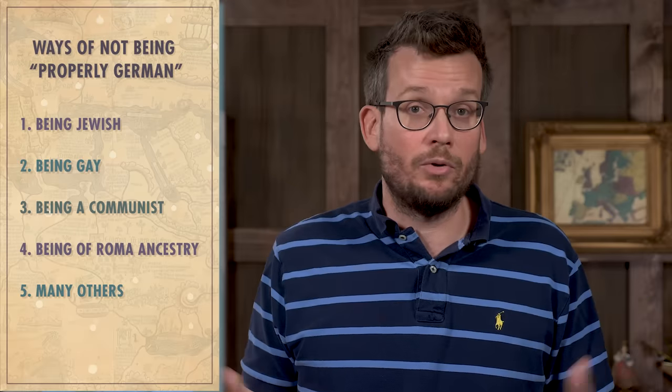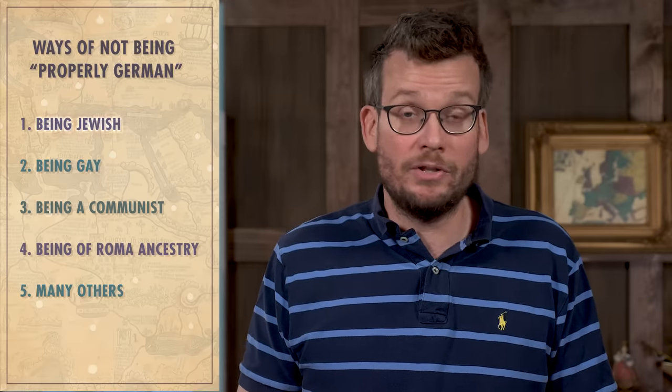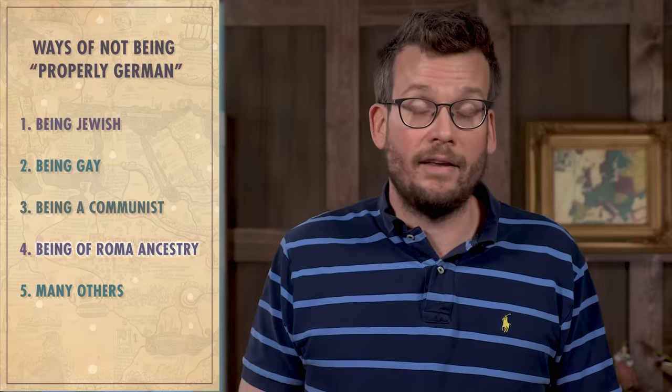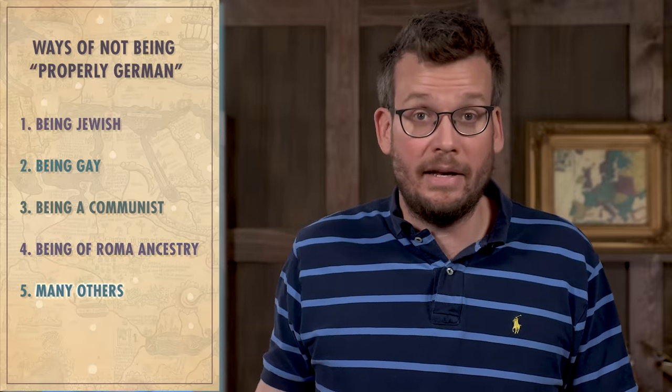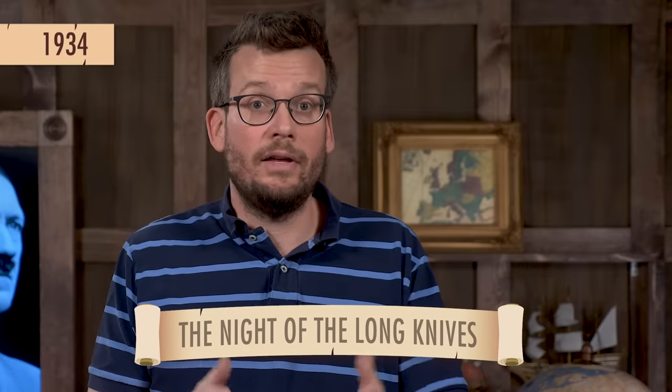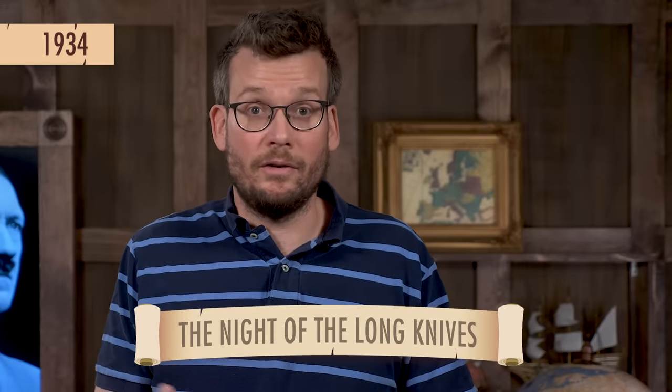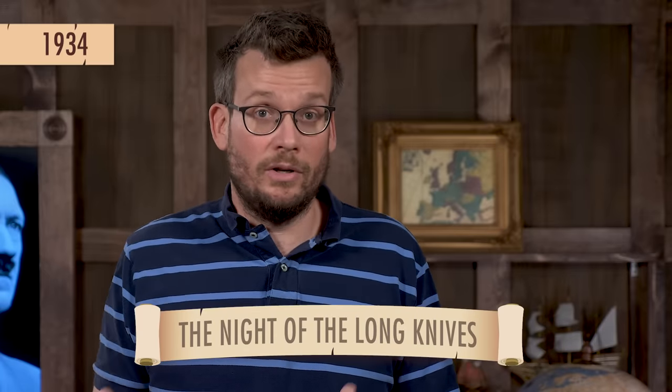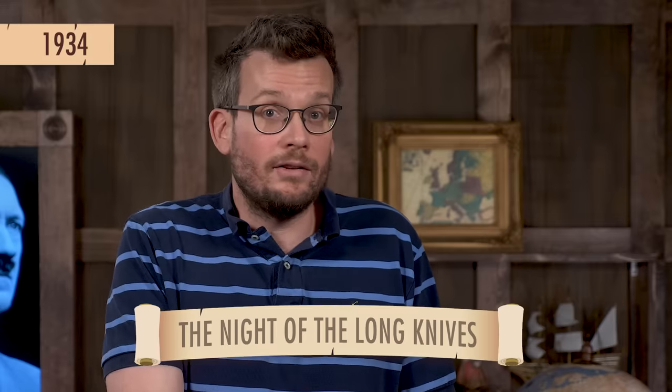He then moved in many directions in order to create a people's community, or Volksgemeinschaft. He had a protection squad created — the SS — that rounded up dissenters or anyone not seen as meeting the Nazis' standards of proper German-ness. Ways of not being properly German included being Jewish, being gay, being a communist, or being of Roma ancestry, among many others. The SS had vast powers to imprison so-called enemies in concentration camps or to execute them. In the Night of the Long Knives in 1934, Hitler's forces massacred hundreds of Nazis who had called for a restoration of Nazi purity by ending alliances with businessmen and the military elite.